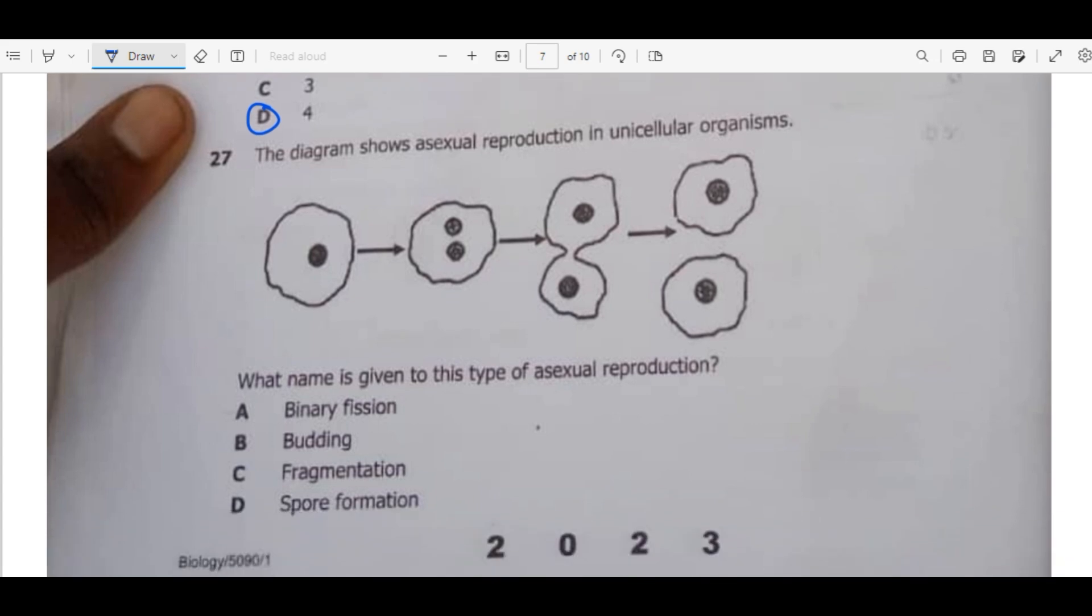We have question 27. The diagram shows asexual reproduction in unicellular organisms. Unicellular organisms are organisms that consist of one cell. What name is given to this type of asexual reproduction? So the best way to remember this kind of asexual reproduction like this one, you can view it as mitosis because we have one cell here, but after the whole thing we have two cells. So this is a binary fission. Binary fission: you have one cell, then it divides to form two daughter cells. You can view it as mitosis.